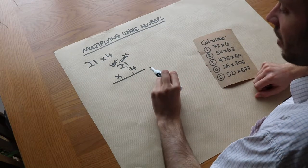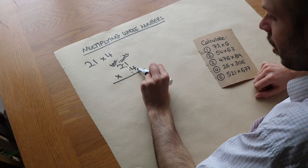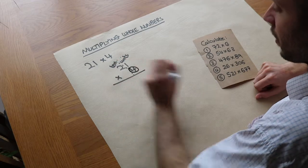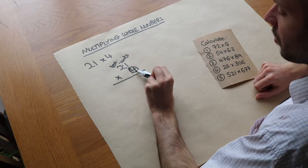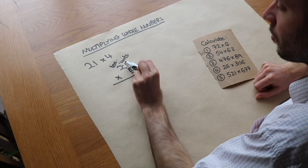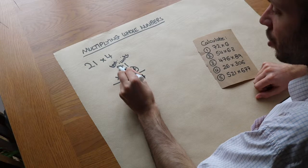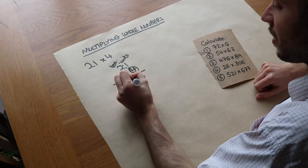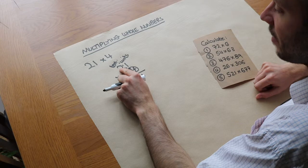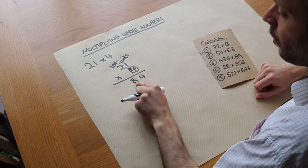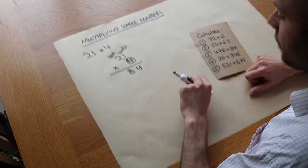We focus on each of the digits in the second number one at a time. We focus on this 4, and then we do each of the digits above multiplied by that 4. So 1 times 4 gives 4, and then 2 times 4 is 8. Because if we have two tens and we multiply by 4, we would have 8 tens — that's why it stays in the same column.